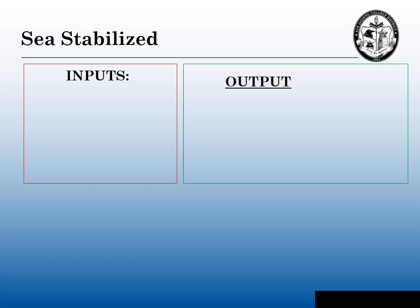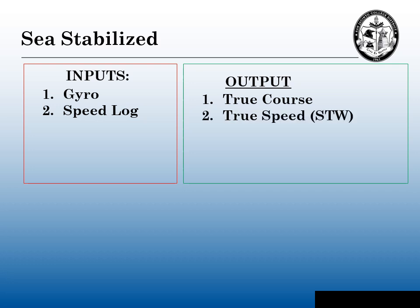Sea stabilized radars and ARPAs — inputs and outputs. The input you're going to need is a gyro. This gyro will align with the meridian on the earth or on a navigation chart, and the output will give us a true course. Your input would also be a speed log, like a dual axis Janus array system, and the output would give us a true speed, or speed through the water.